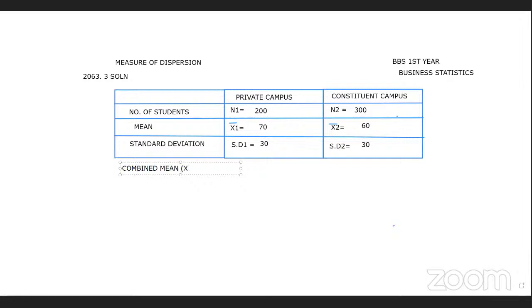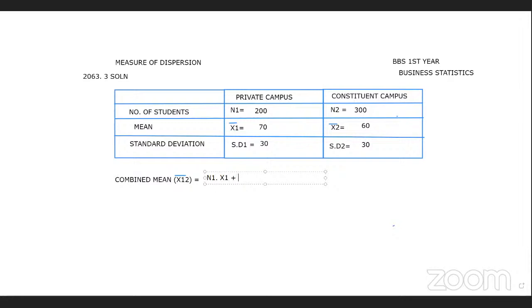To find the combined mean, the formula is: x-bar combined equals n1 times x-bar1 plus n2 times x-bar2, divided by n1 plus n2.